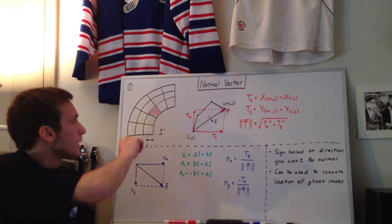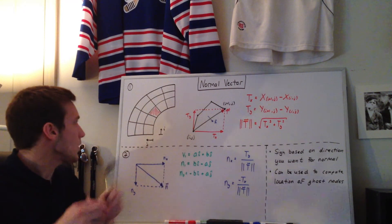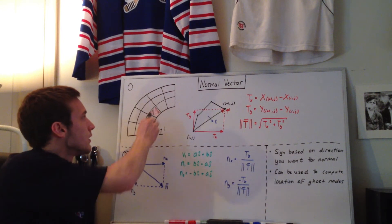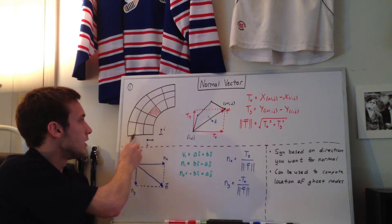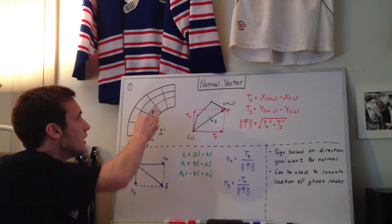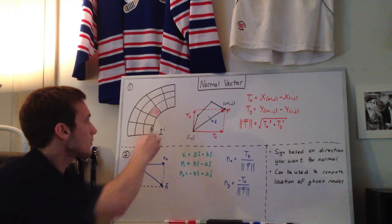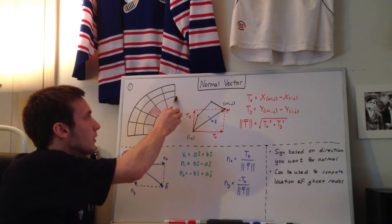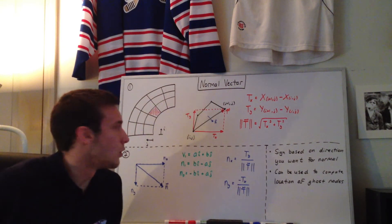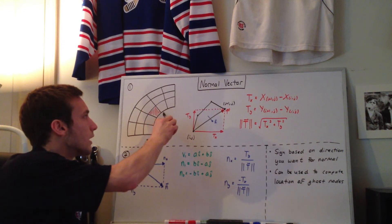Let's look at a grid first. This is a typical kind of curvilinear grid where we have our i-direction running along these lines and our j-direction running along these lines here. I'm going to take a look at just this cell here — this is some random cell that has one of the boundaries. It could have been this cell with this boundary, this cell with this boundary, this cell with this boundary. But essentially the goal is to find the outward normal vector of the cell boundary.